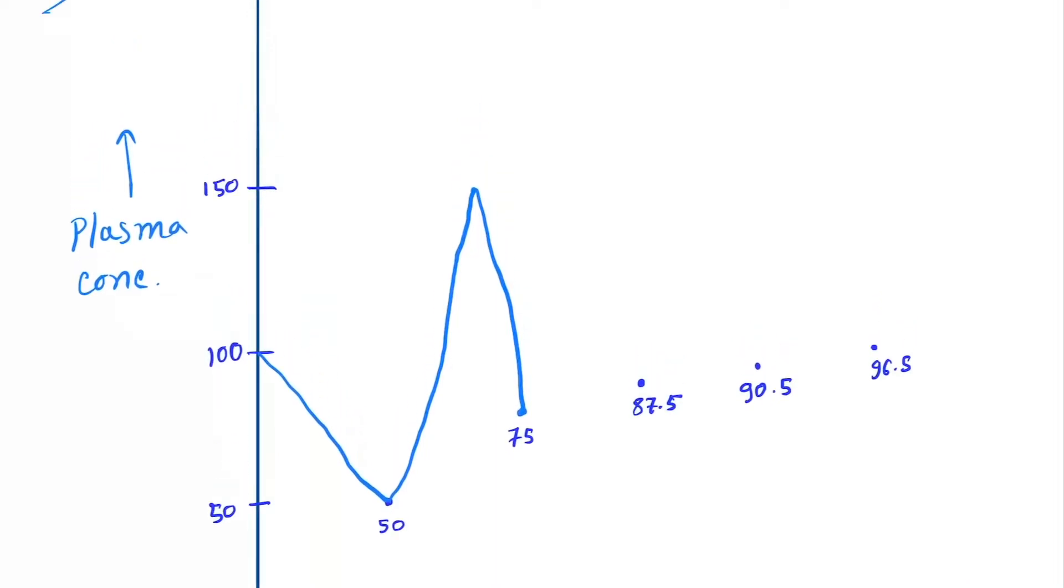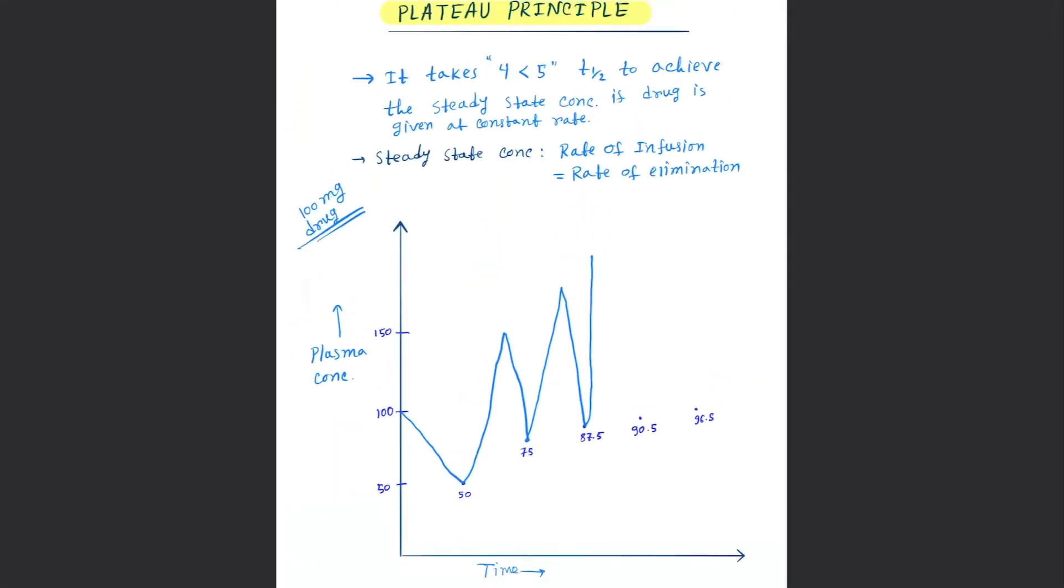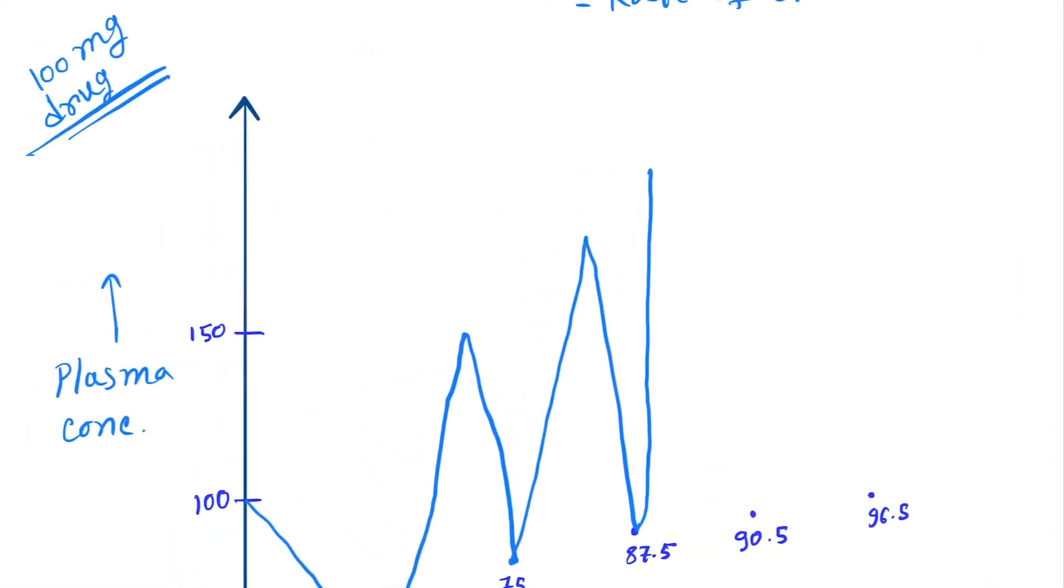So now it becomes 175, and then it comes down to its half-life value, which is 87.5. Next, we add 100 milligrams of drug, so it becomes 187.5, and then it comes down again.